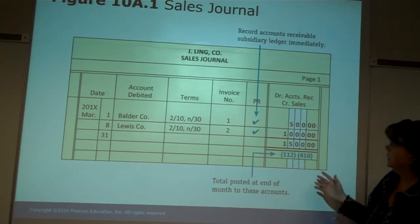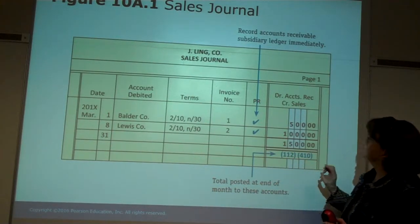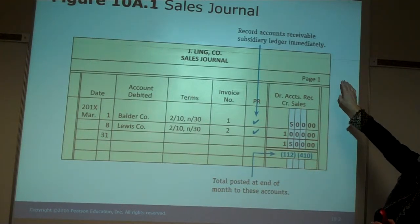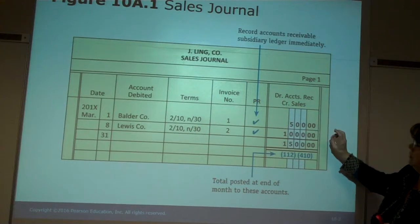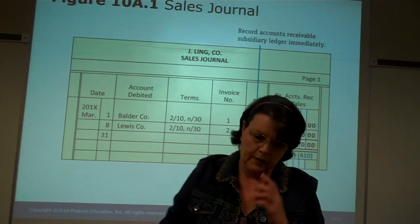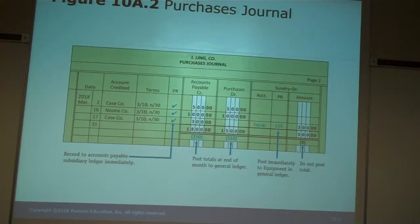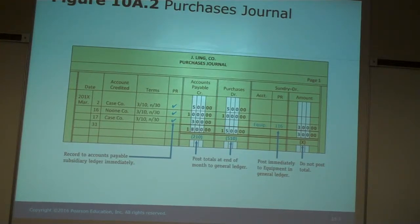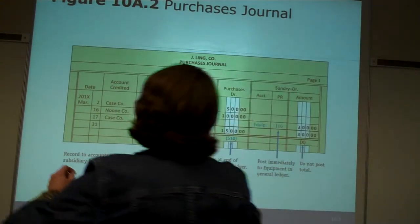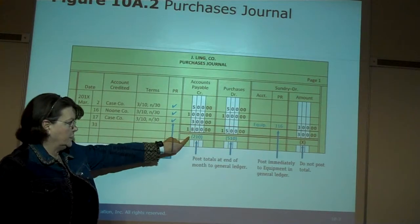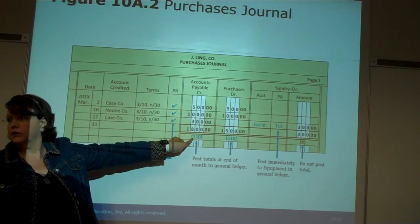So it saves us just a little bit of time. Record the accounts receivable subsidiary ledger immediately. Here's the purchases journal. The purchases transactions — accounts payable credit, purchases debit — that's always going to be the same. We can post the total instead of posting everything individually.